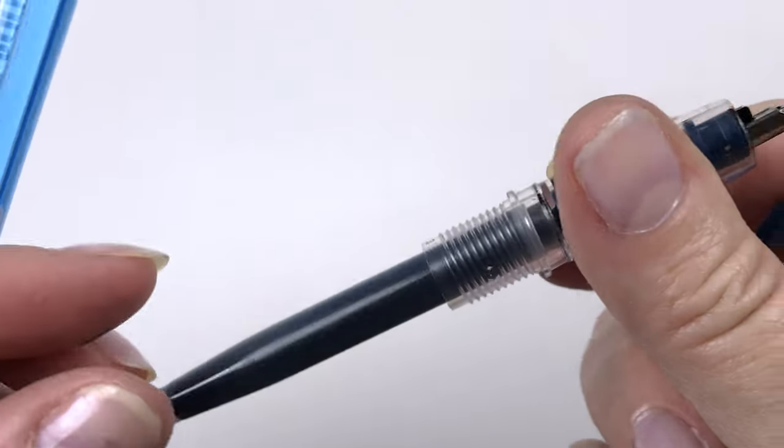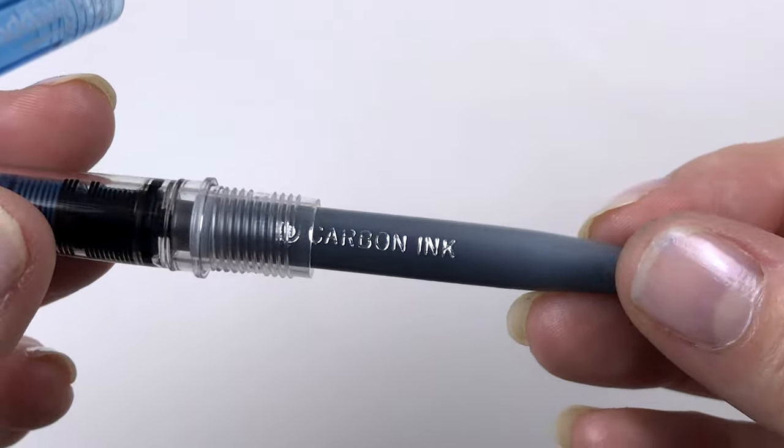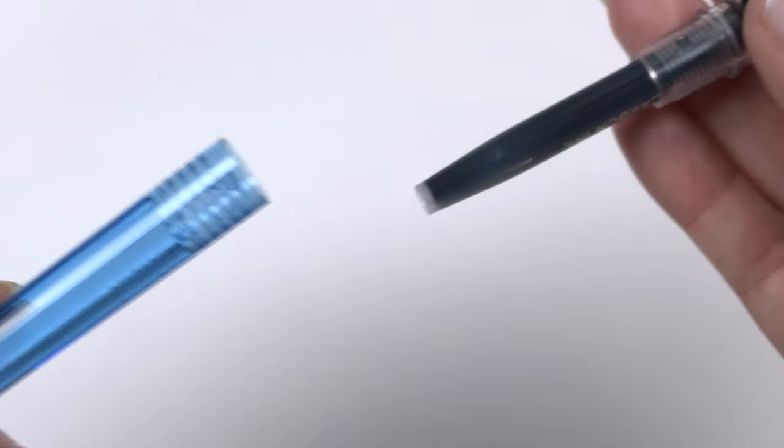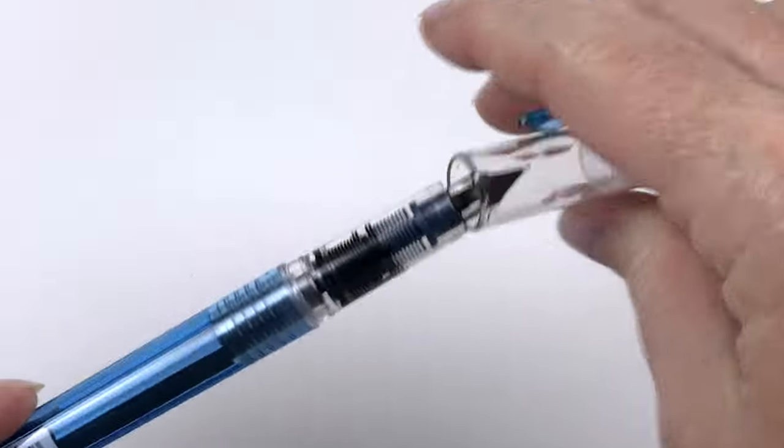I replaced the cartridge that comes with the pen when you buy it, which is just a normal ink, with this waterproof Platinum Carbon ink. When you buy the pen you'll get a cartridge of the same color of the body. So if you buy a blue pen, it's going to be blue ink. If you buy a red pen, it's going to be red ink.